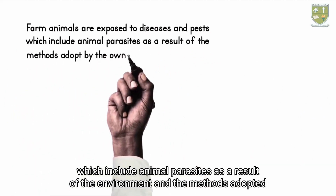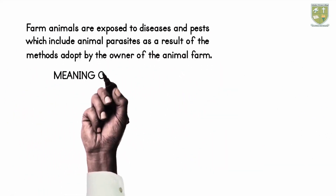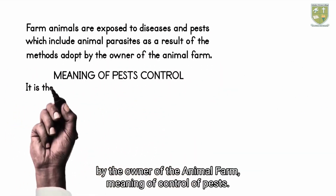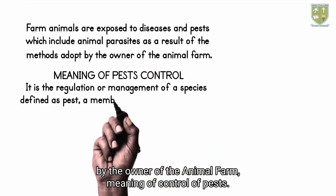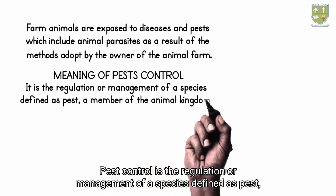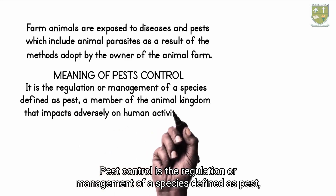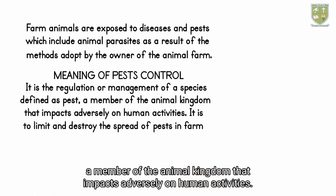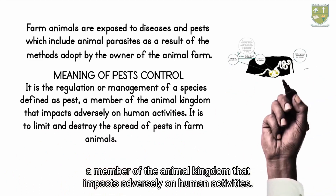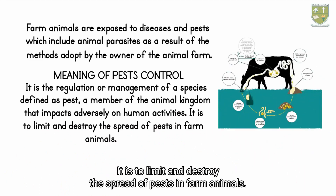Pest control is the regulation or management of a species defined as a pest — a member of the animal kingdom that impacts adversely on human activities. It is to limit and to destroy the spread of pests in farm animals.